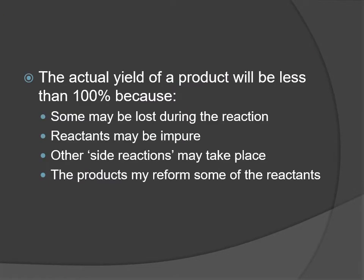Some things that can go wrong to give you less than 100% yield: you may actually lose some of the product during the reaction — you're making it but you can't catch it all to measure. The reactants themselves may be impure, so if you think you're reacting 10 grams of something but it's really only 9 grams of that substance, you'd expect a certain amount but get less. The purity of the reactants brings down your percentage yield.